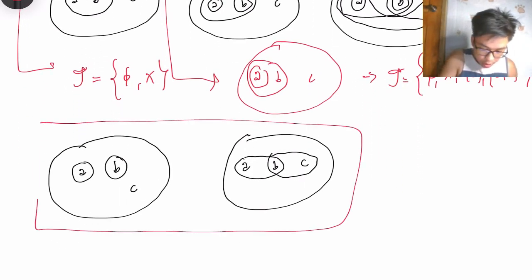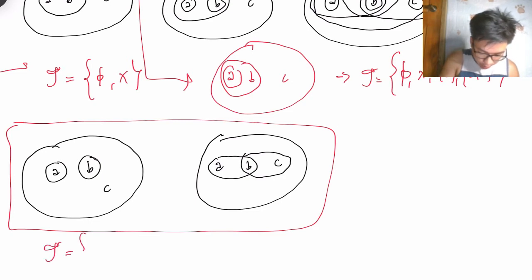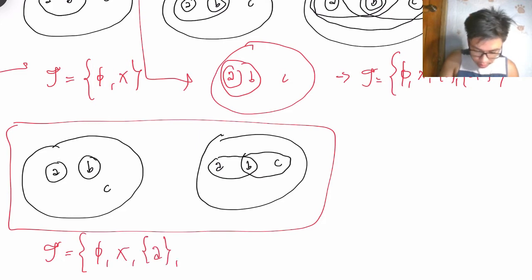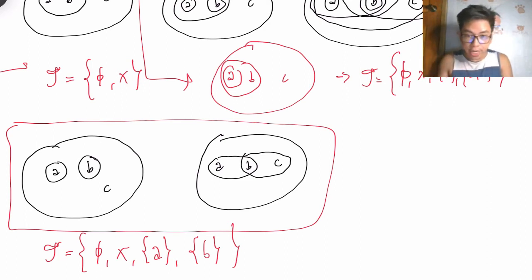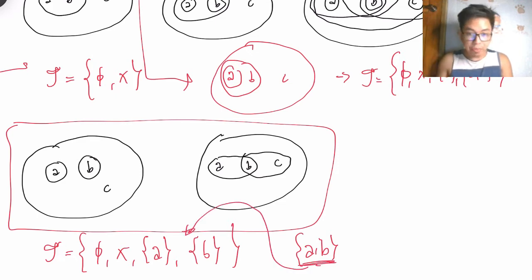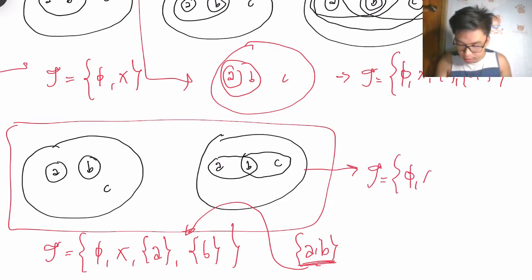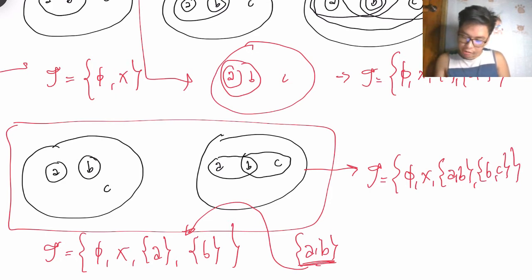Let's double-check the last two figures. For one of them, tau = {empty set, X, {a}, {b}}. The empty set and X are present so condition one is satisfied. However, if you take the union of {a} and {b} you get {a,b}, which is not in this tau — so it fails condition two and is not a topology. Similarly, for tau = {empty set, X, {a,b}, {b,c}}, the intersection of {a,b} and {b,c} gives {b}, which is not in tau — therefore that is also not a topology.